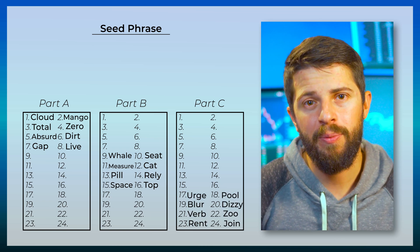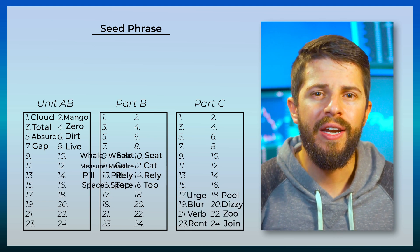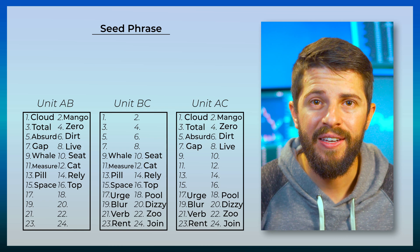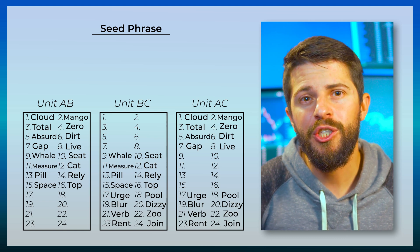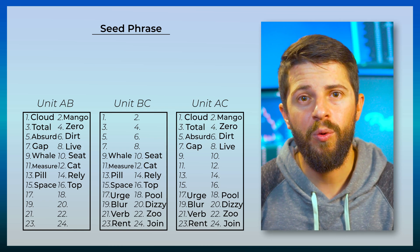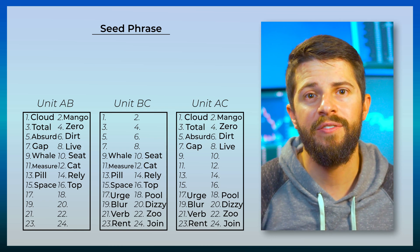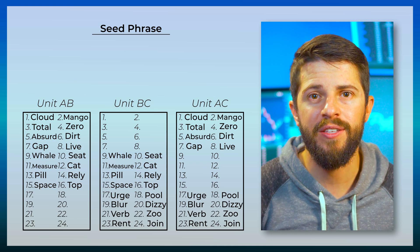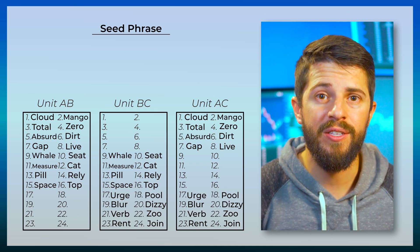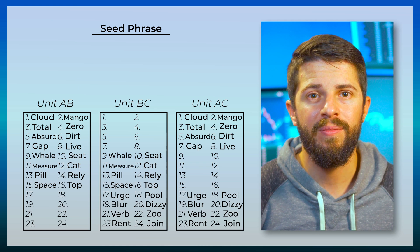Then you recombine each part into three shared units: Unit AB, BC, and AC. Since each unit only has 16 of the 24 words, any one part is not enough to steal your seed phrase. But if you combine any two of the three units, you get your full 24 words again.